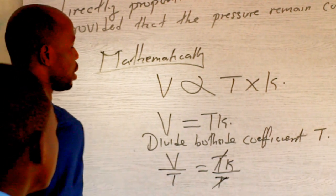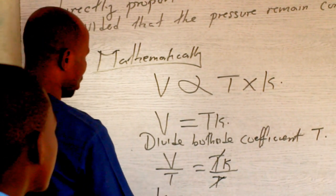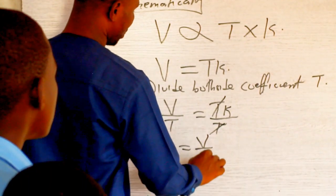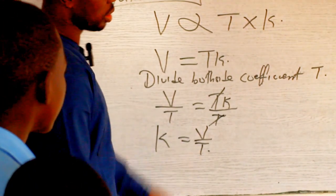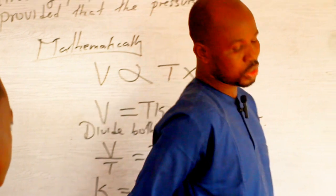We cancel this one. So the final term will now be V over T equals K. This is the Charles' Law equation.